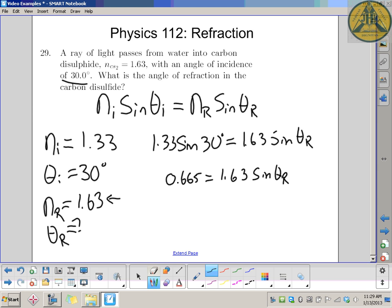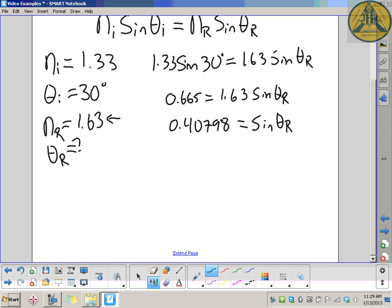Divide both sides by the 1.63. We get on the left 0.40798 equals the sine of the refracted angle. When you're doing these on tests and quizzes to get consistent answers, make sure you keep at least four decimal places before you do the inverse sine.